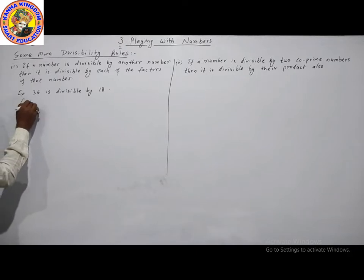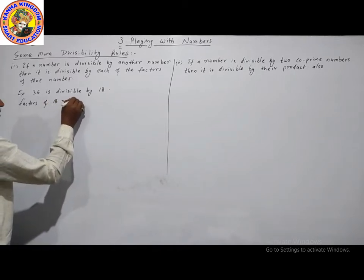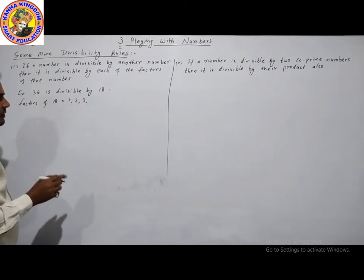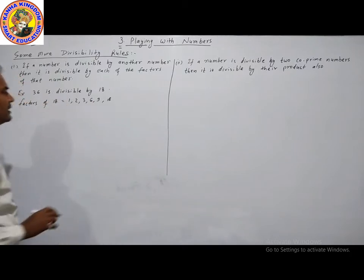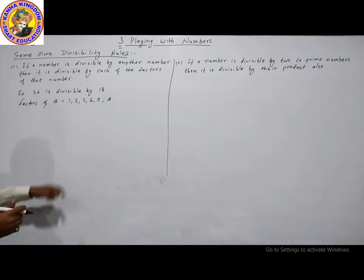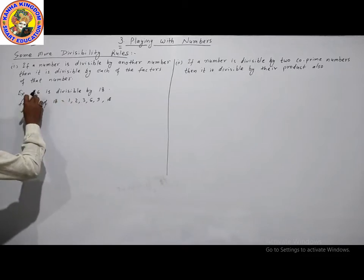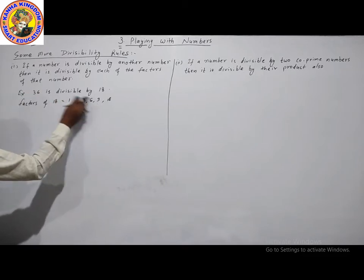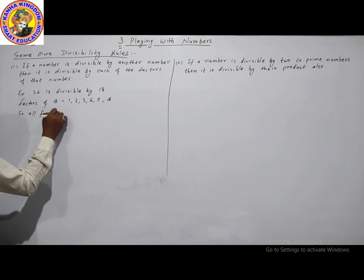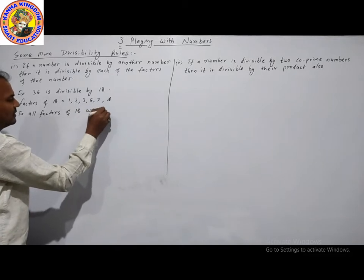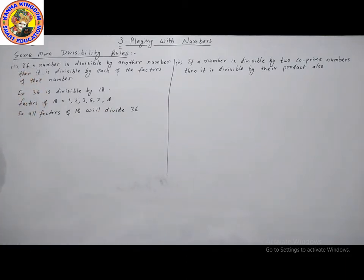The factors of 18 are the numbers that can divide 18: 1, 2, 3, 6, 9, and 18. Now checking: 1, 2, 3, 6, and 9 can all divide 36. So all factors of 18 will also divide 36, confirming the rule.